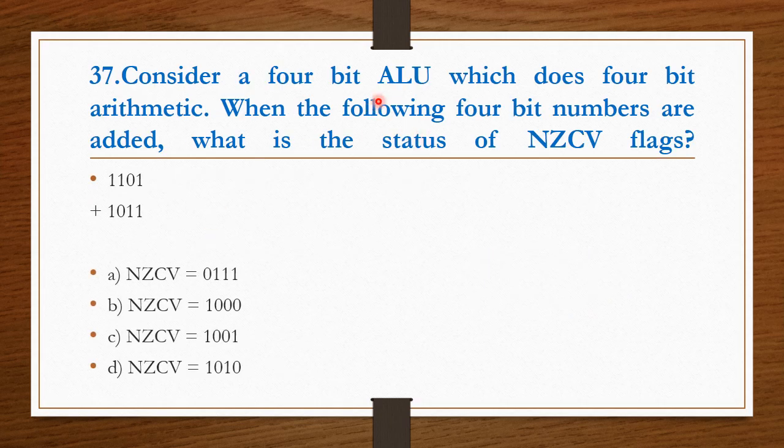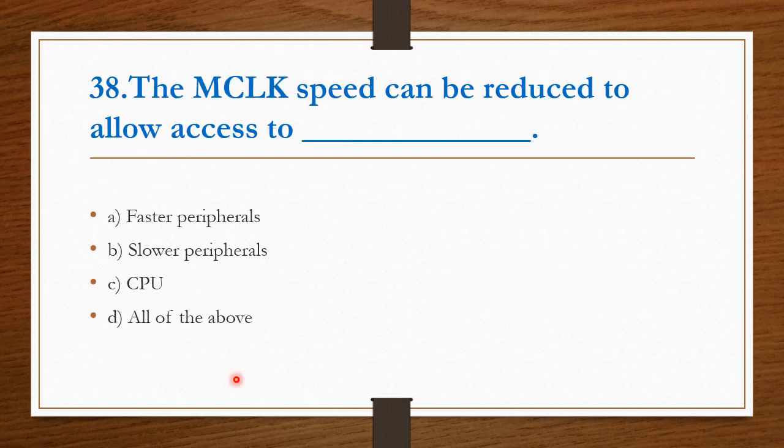Consider a 4-bit ALU which does 4-bit arithmetic. When the following 4-bit numbers are added, what is the status of NZCV flags? While adding these two numbers, you will be getting option D as the answer. NZCV, that is its zero value, carry value, overflow value. That value is equal to 1010. The M-clock speed can be reduced to allow the access to slower peripherals. Option B is the right answer.